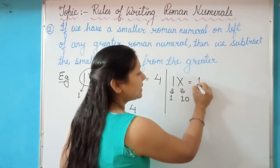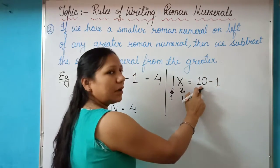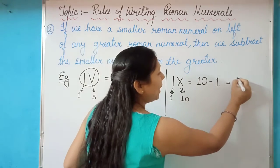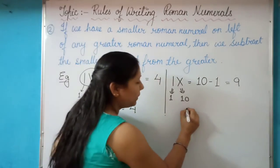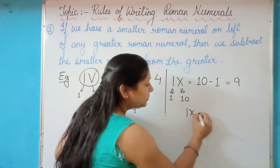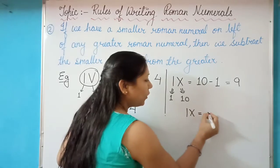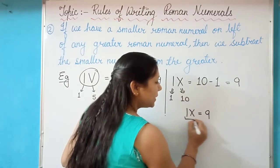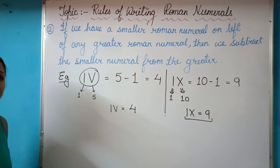So once again, let us subtract, smaller numeral from the bigger numeral. 10 minus 1 is 9. It means the symbol IX in the Roman format represents digit 9 of the Hindu Arabic. This is our second rule.